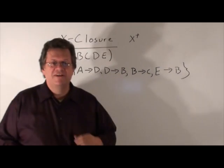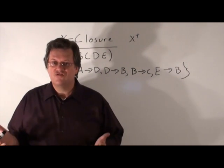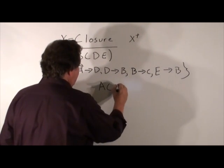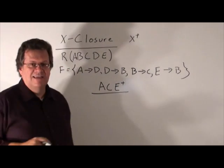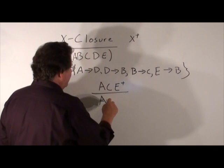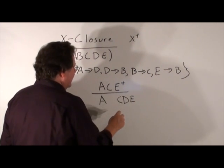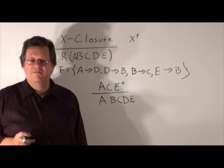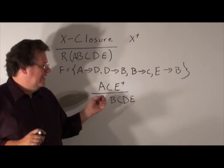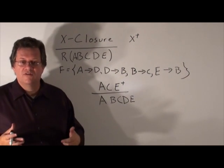As you recall from our definition of a key, an attribute or a set of attributes is a key if it functionally determines all the attributes in R. So, if I had A, C, E, and I wanted A, C, E closure, I would have A, and A functionally determines D, so I'd have a D. I'd obviously have the C, I'd have the E, and since D functionally determines B, I would have A, B, C, D. So, it looks like we have a key, right? Not exactly. Because, if you recall, here, the closure did find all the attributes in R, but we need to know whether or not it is minimal.